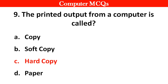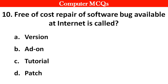Free of cost repairs of software bugs available on the internet is called: option A versions, B add-on, C tutorials, D patch. Right answer is option D, patch.